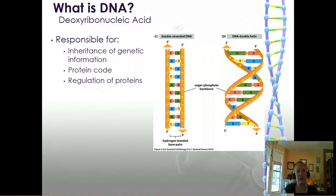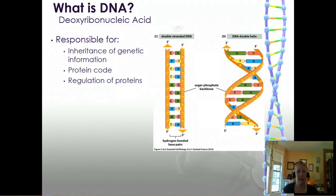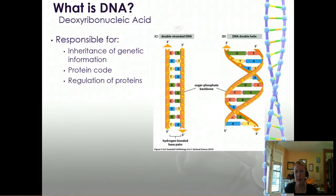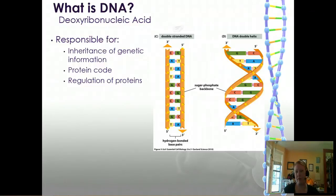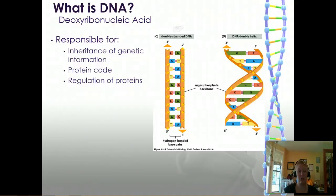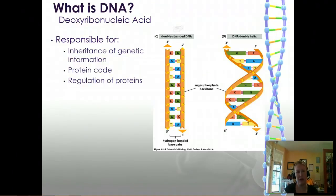So let's start by talking about what DNA is. DNA stands for deoxyribonucleic acid, and it's responsible for the inheritance of genetic information. This is the blueprint for everything that we are — it's the reason why you have the hair color you have, the eye color you have, and why you sunburn or tan. All of that is stored there.